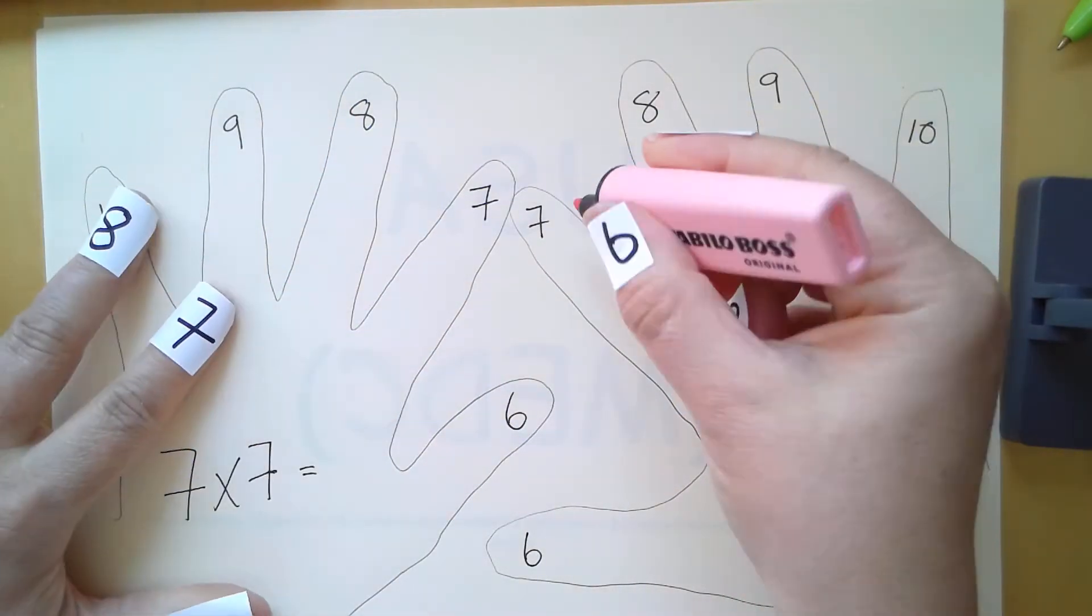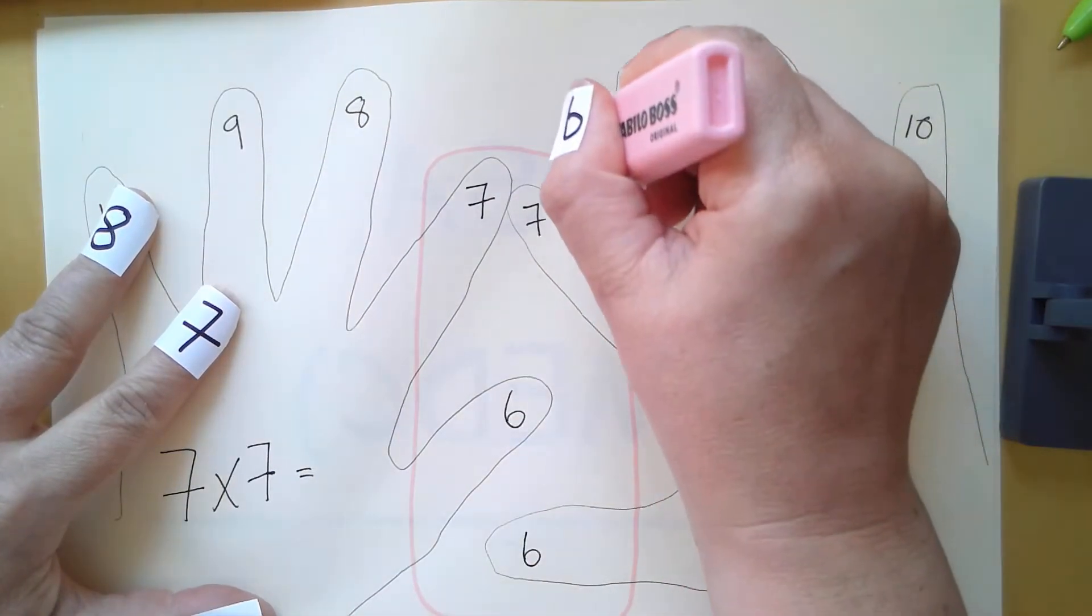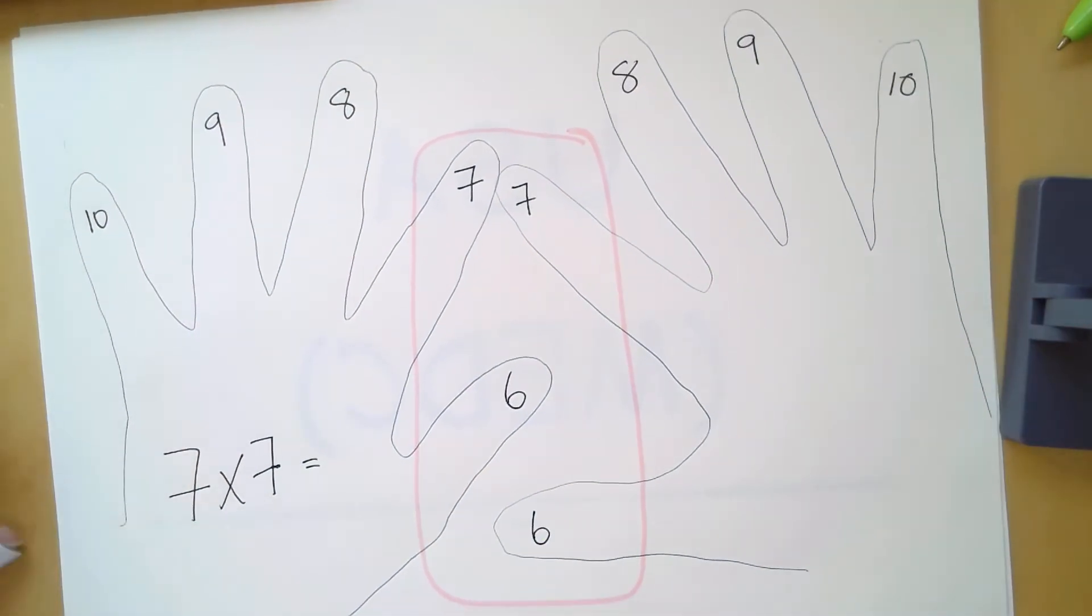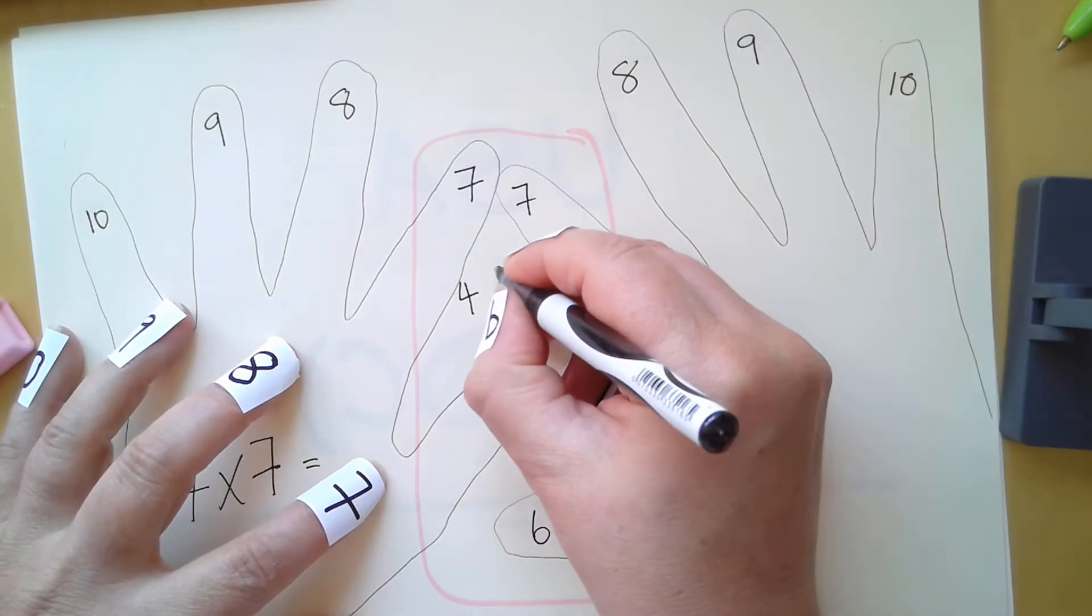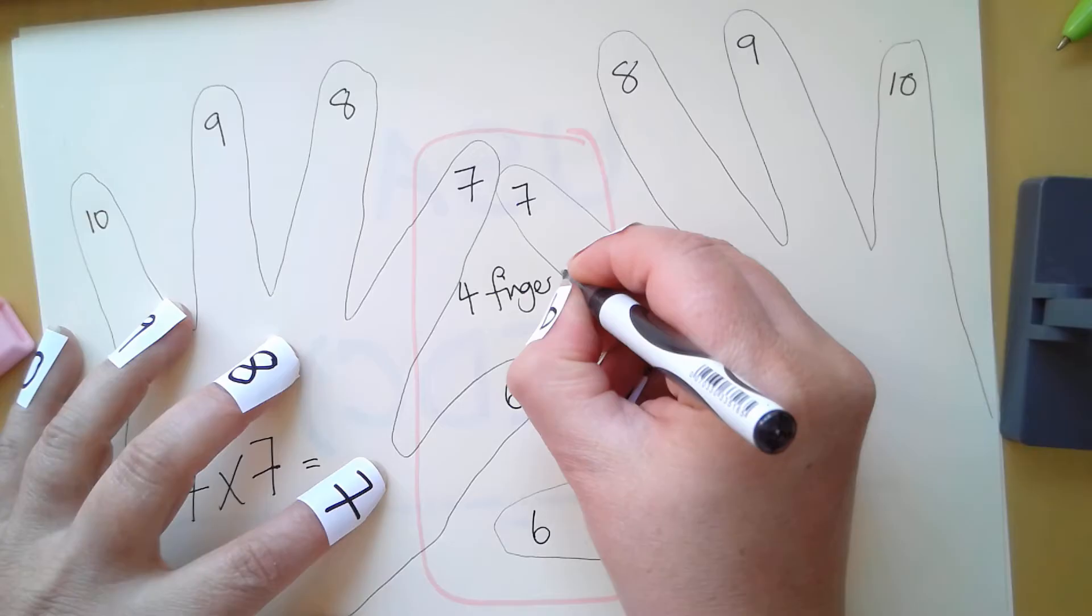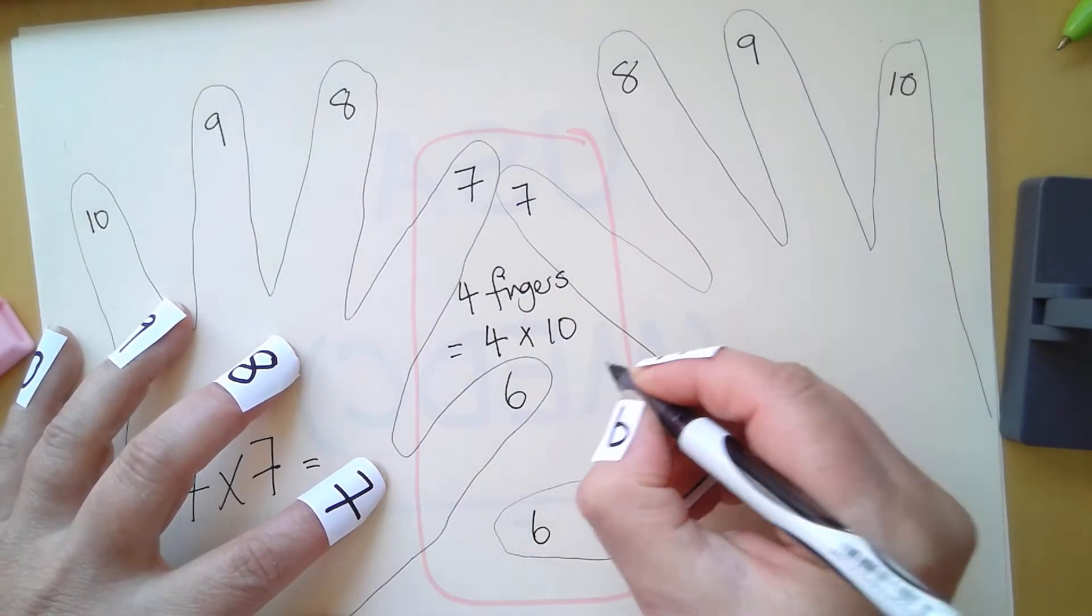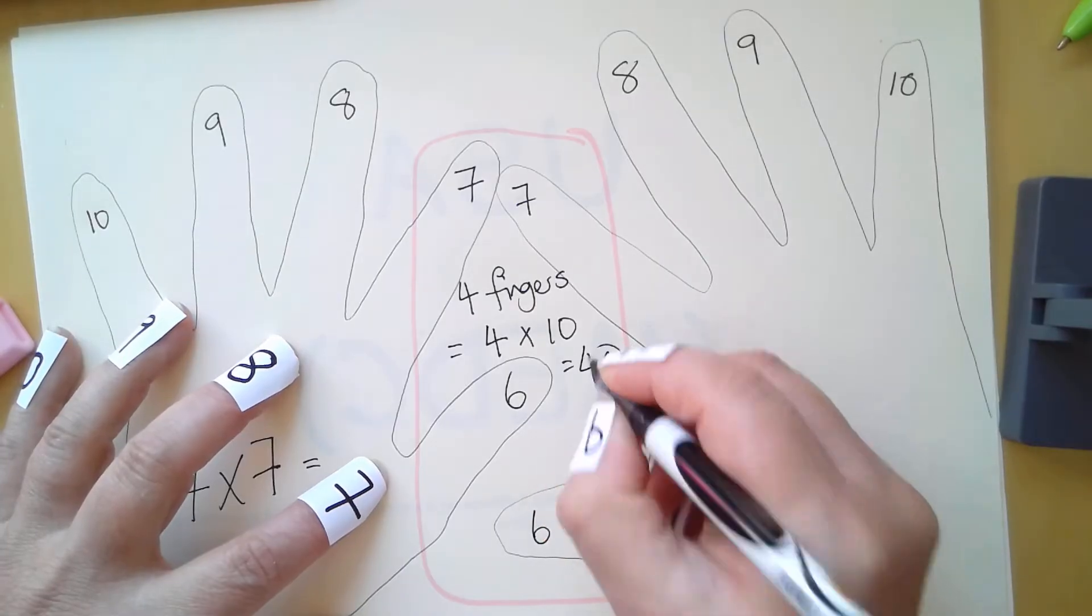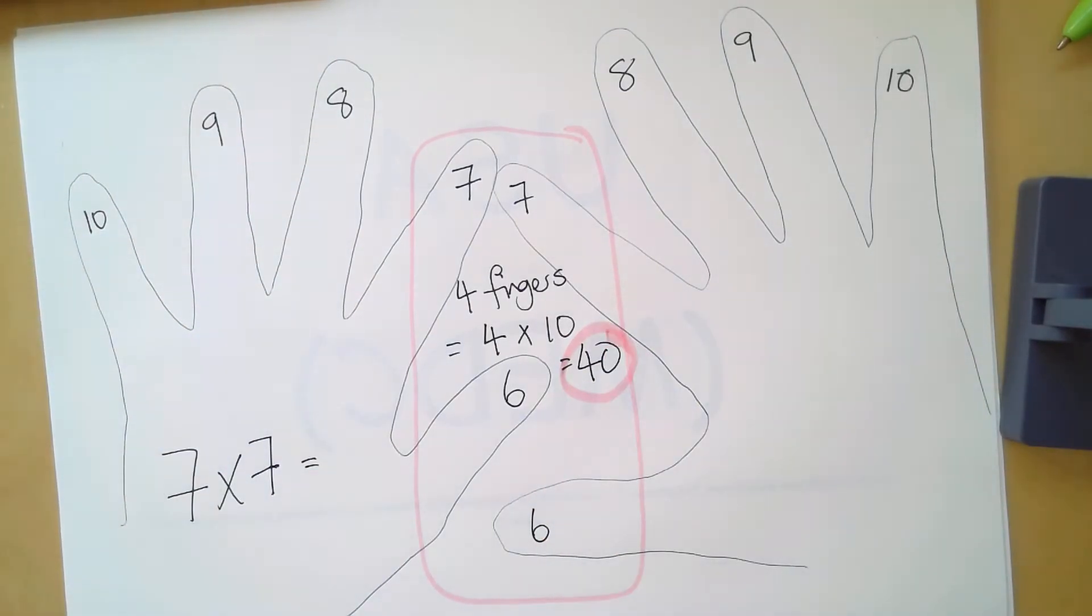I'm going to highlight those fingers that are touching and those fingers that are below. Four fingers equals four times 10, which equals 40.